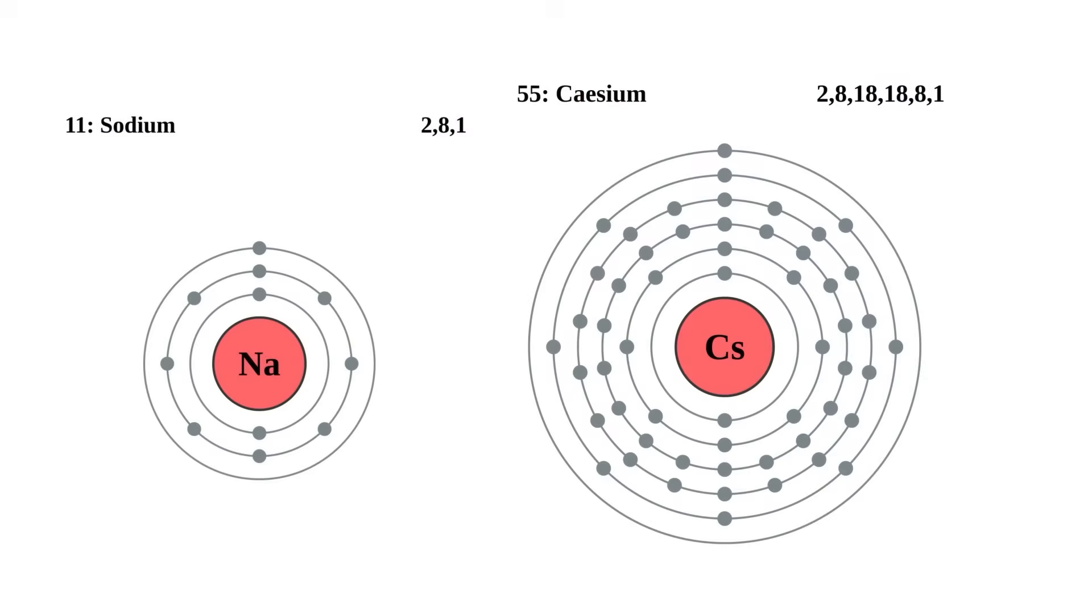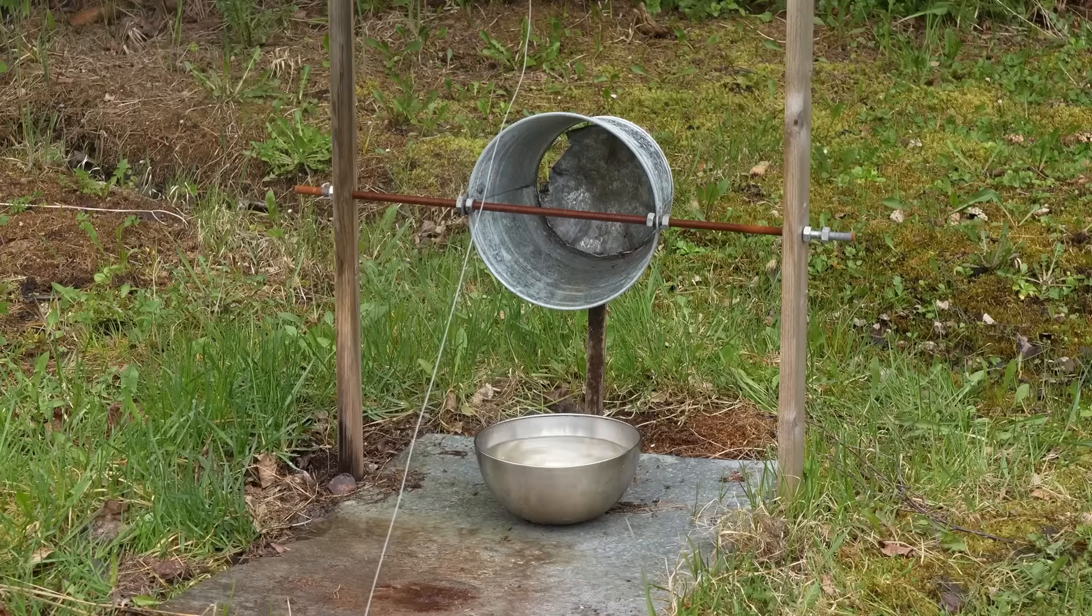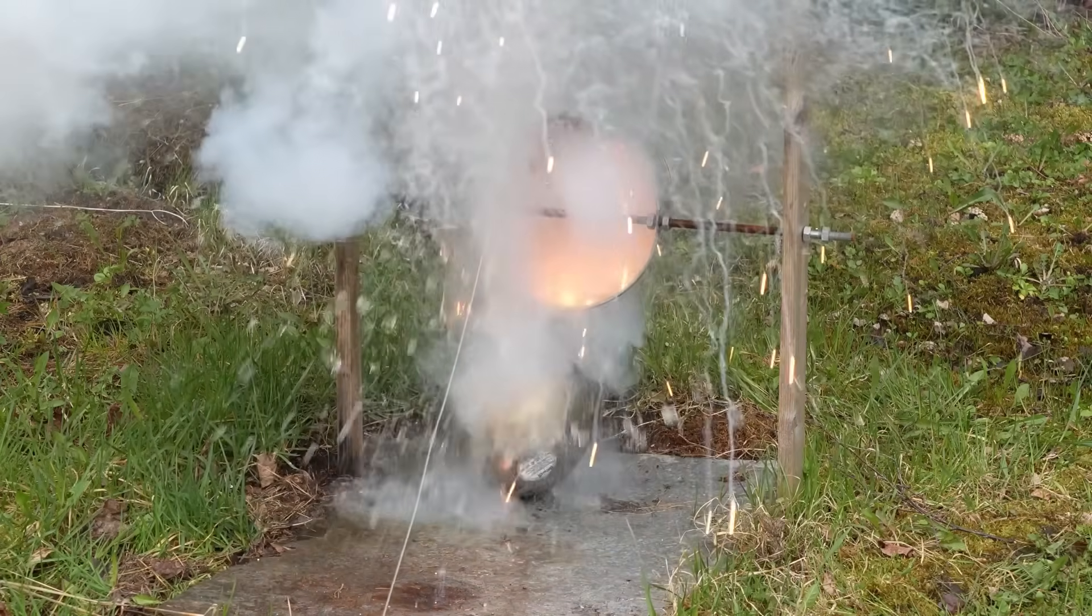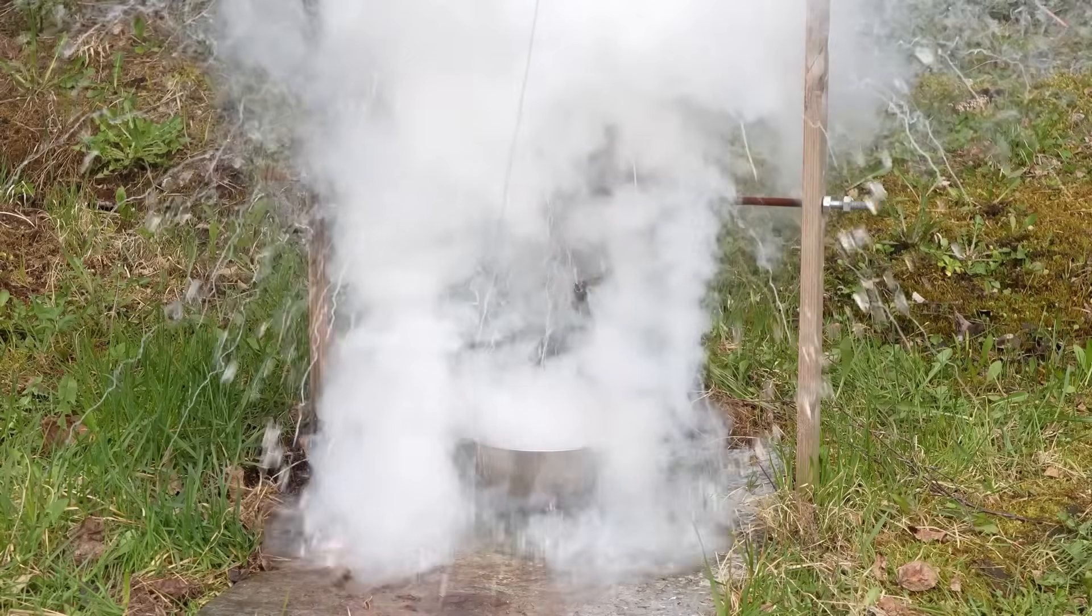And this is where the laws of chemistry come into play. The thing is, the size of a cesium atom is about six times larger than that of a sodium atom. And accordingly, if you take 10 grams of sodium, that piece will contain six times more sodium atoms than there are atoms in 10 grams of cesium. Because of this, the energy released when 10 grams of sodium react with water will be about six times higher than from the reaction of 10 grams of cesium with water.